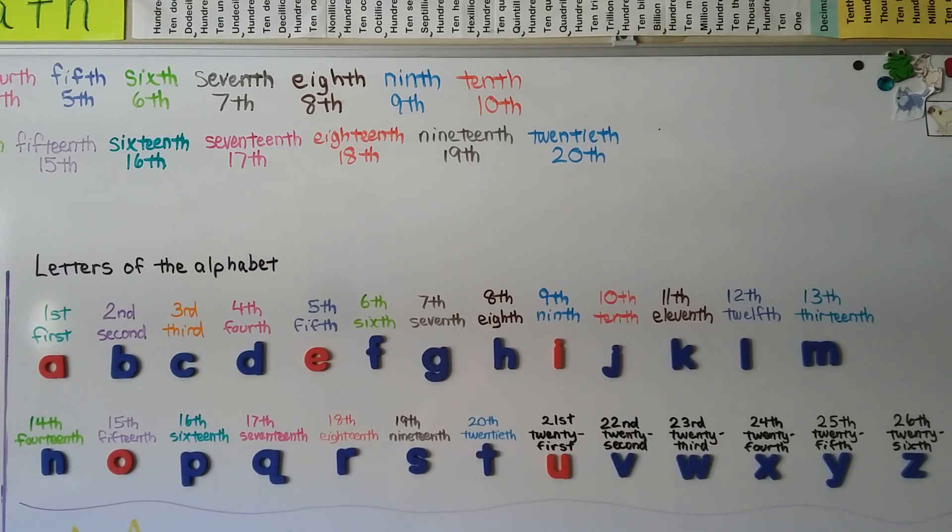What about the ordinal number for R? R is the eighteenth letter of the alphabet. And there's twenty-six letters of the alphabet, so Z is the twenty-sixth letter of the alphabet.